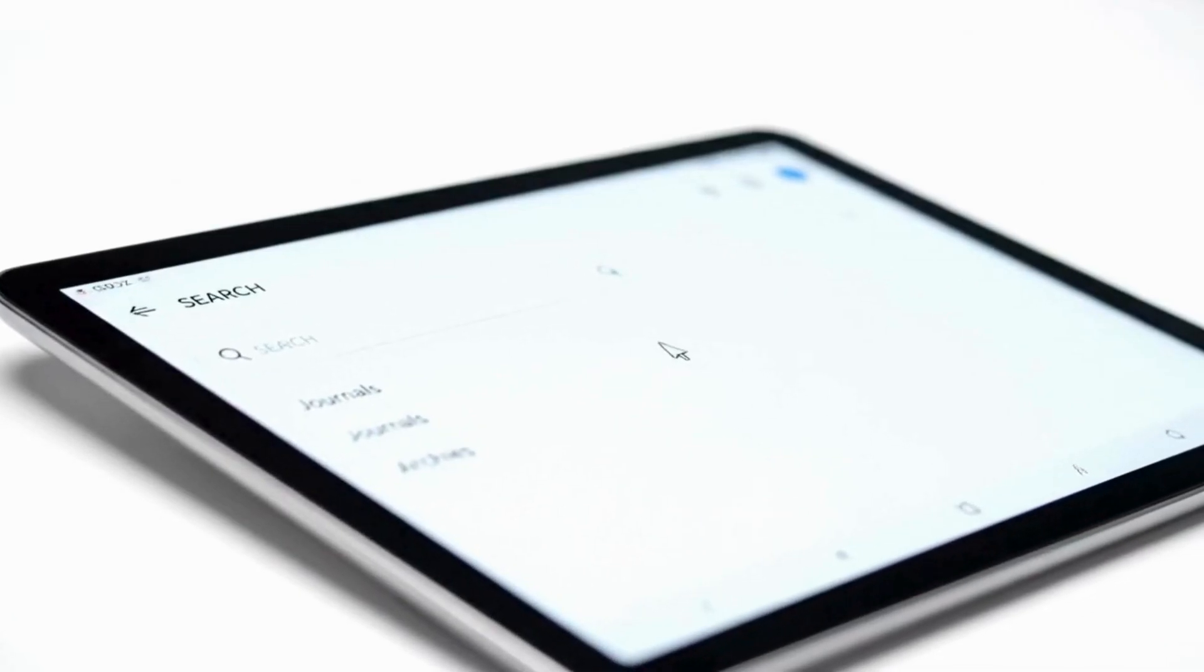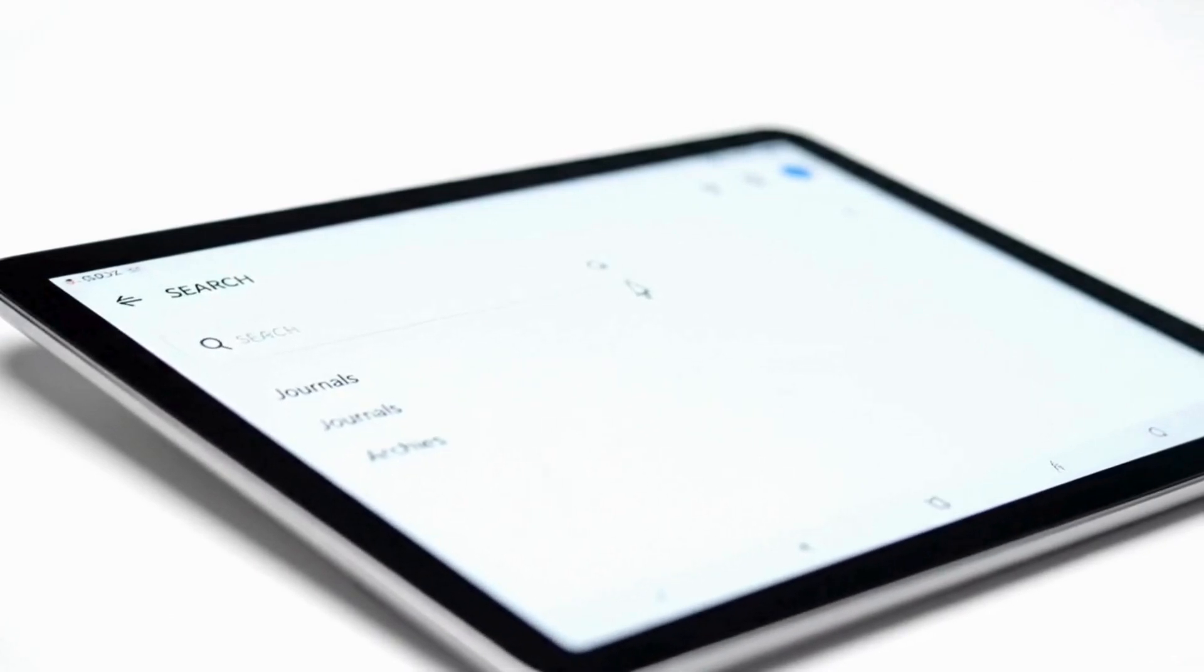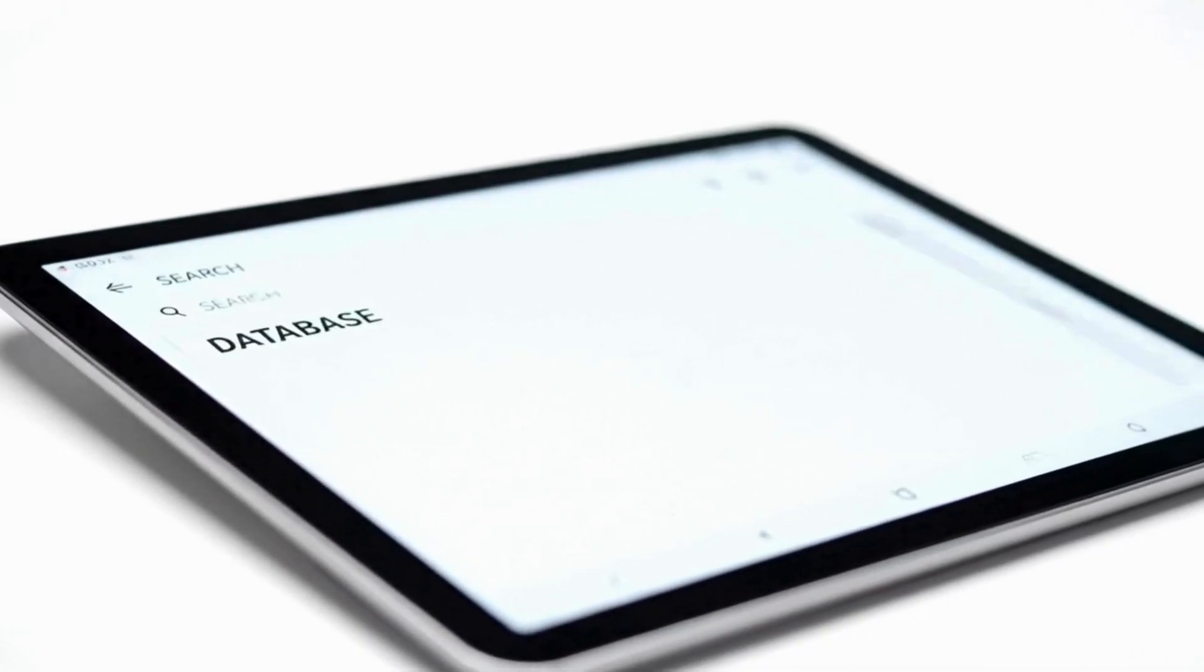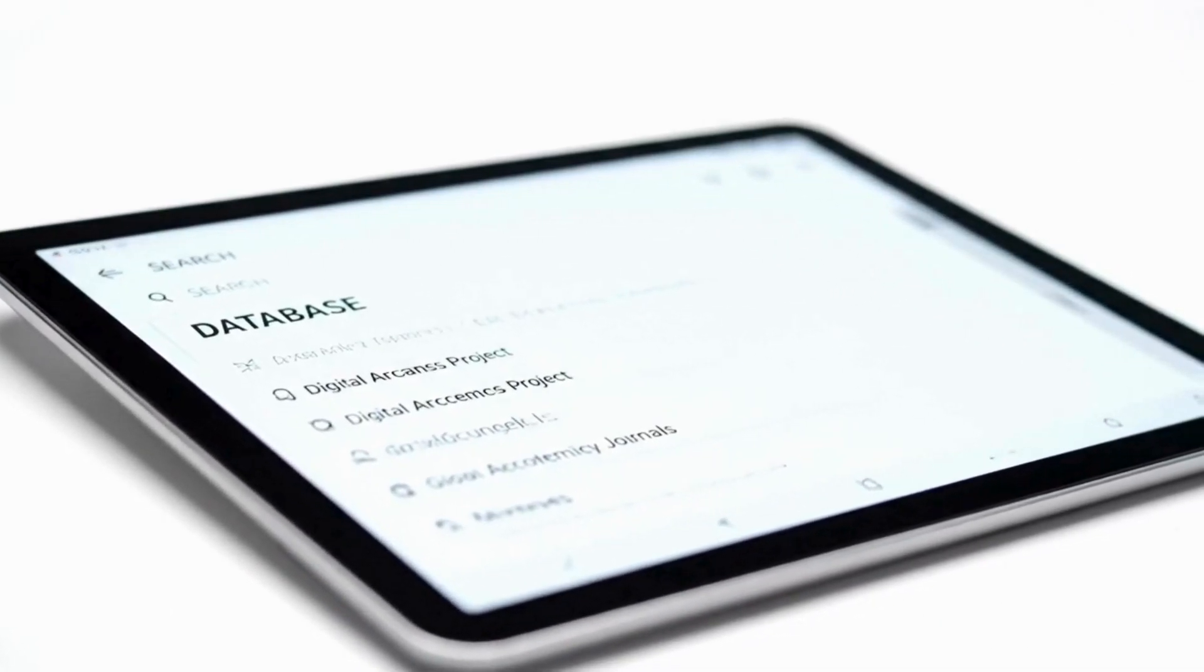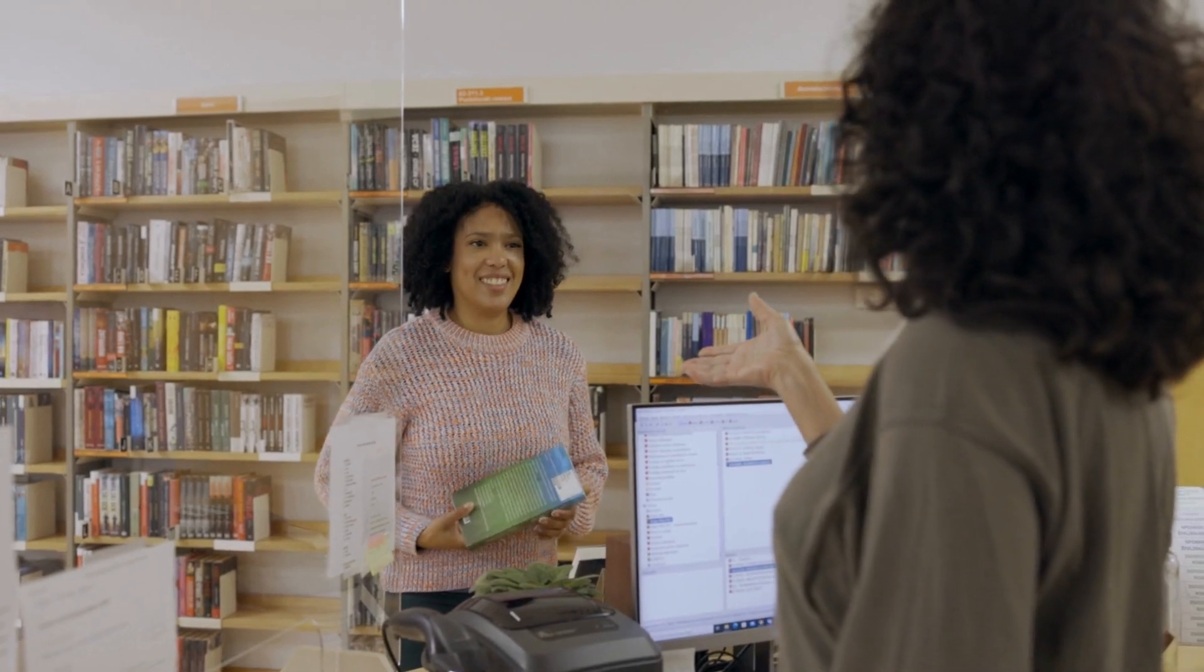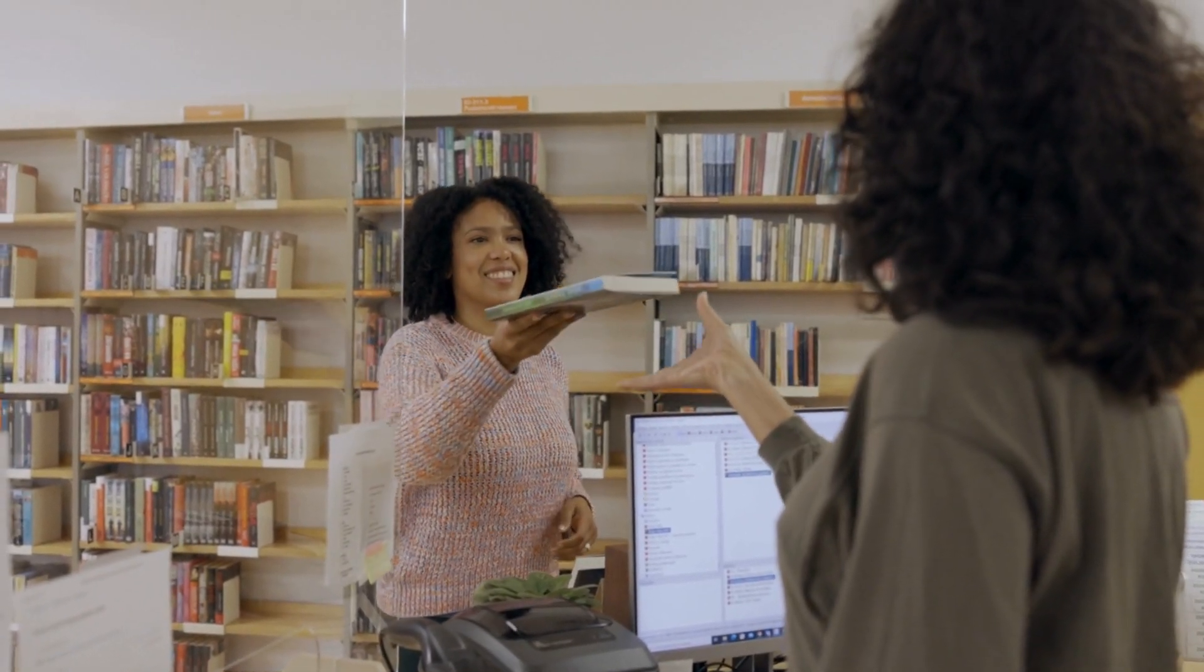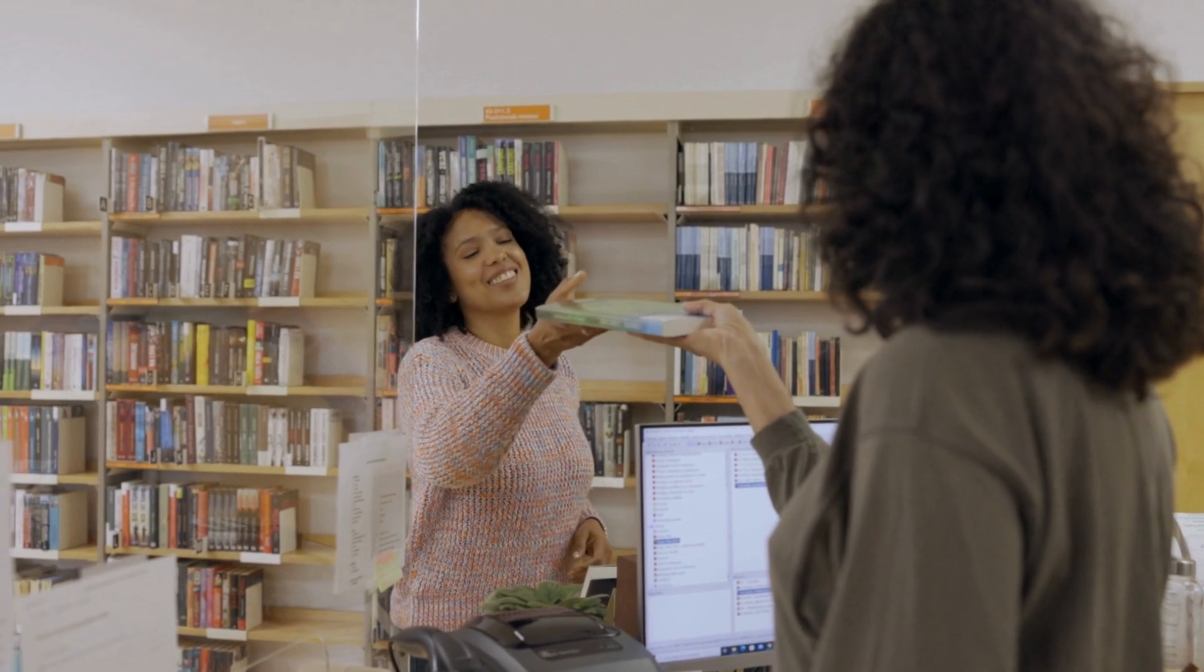Imagine you're running a library. You need to keep track of thousands of books, who borrowed them, when they're due back, and member information. Instead of using paper cards, you use a database. It stores all this information electronically and lets you search, update, and manage everything quickly.